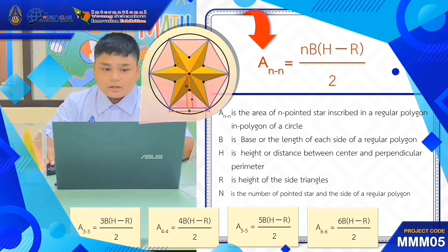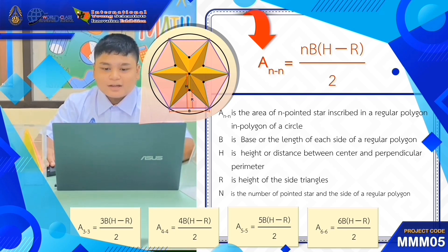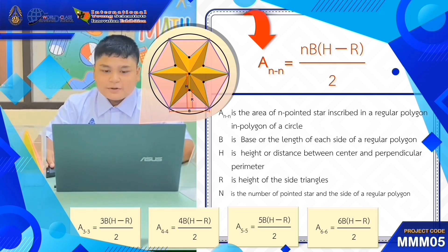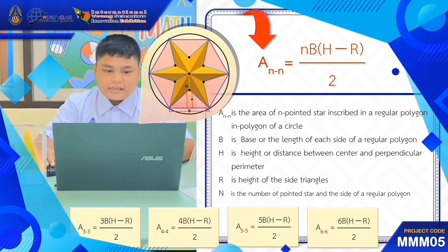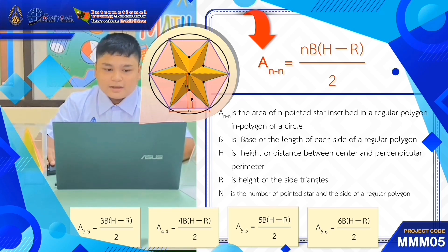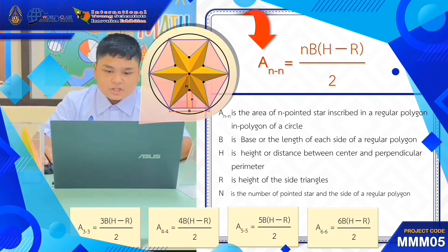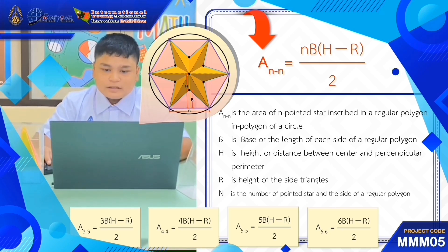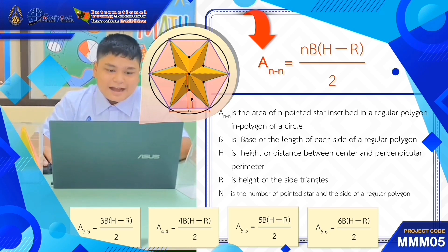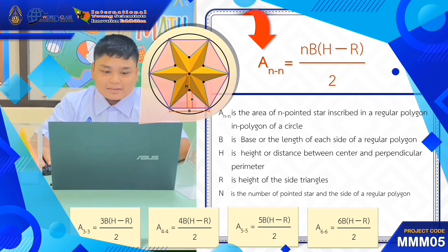In conclusion, the general formula for finding the area of an n-pointed star inscribed in a regular polygon in a circle is: An equals one-half times n times B times the quantity H minus R. Where A is the area of the n-pointed star, B is the base length of each side of the regular polygon, H is the height or distance between the center and the perpendicular bisector, and N is the number of points of the star and the number of sides of the regular polygon.